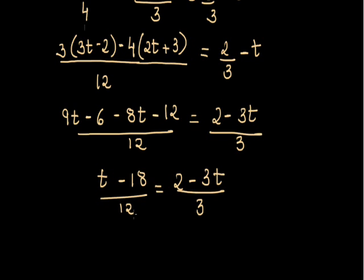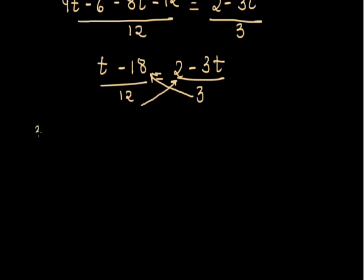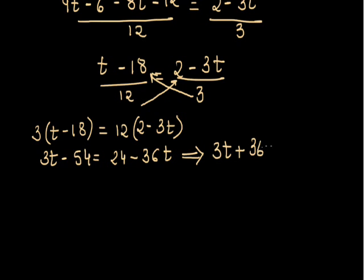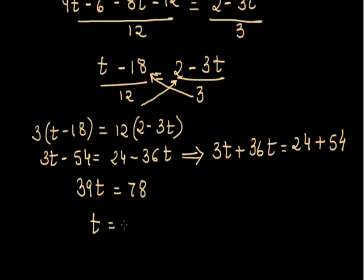Now I can cross multiply 3 to the left hand side and 12 to the right hand side. It will become 3 into (t minus 18) is equal to 12 into (2 minus 3t). Solving the brackets: 3t minus 54 is equal to 24 minus 36t. Taking variables on one side: 3t plus 36t is equal to 24 plus 54, so 39t is equal to 78. Dividing 39 on both sides, the value of t is 78 upon 39. Cancelling, 39 twos are 78, so the value of t is equal to 2.